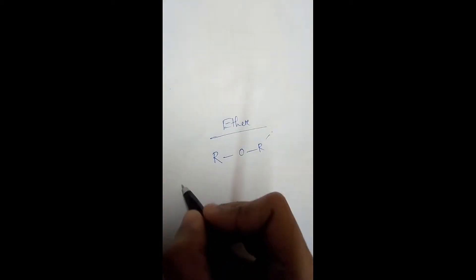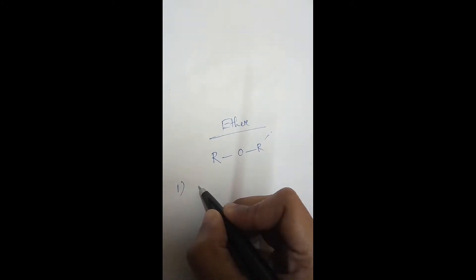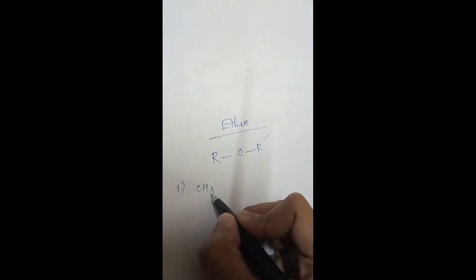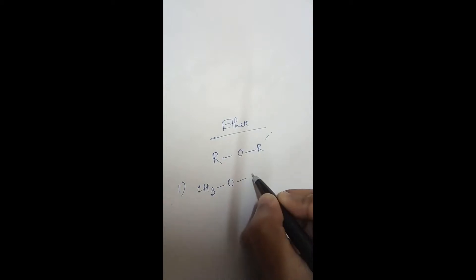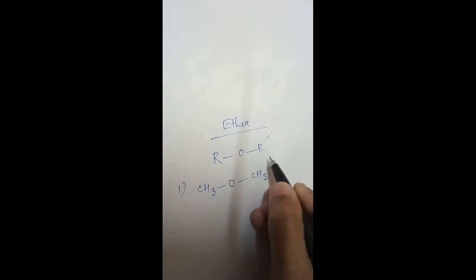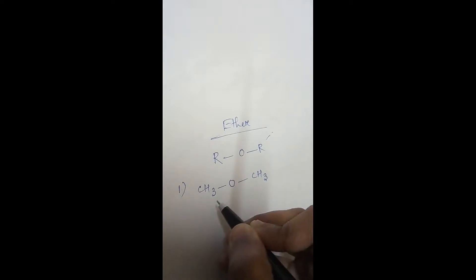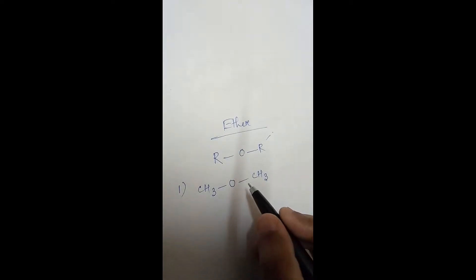Now take one example. Suppose CH₃OCH₃. Here you can see R and R prime are both the same group — the methyl group — and one oxygen atom is present between the two alkyl groups. So this is an ether.